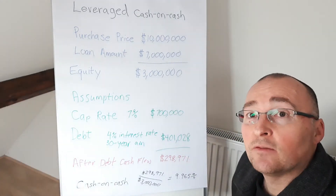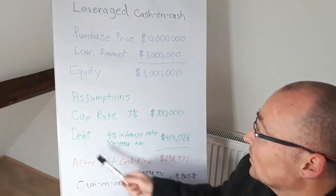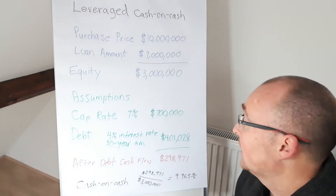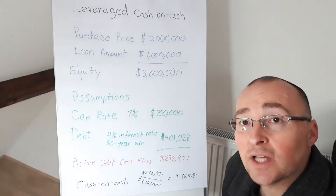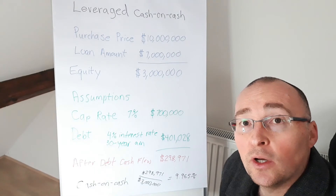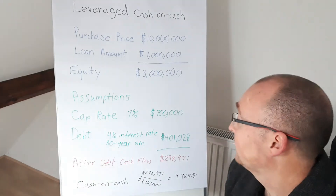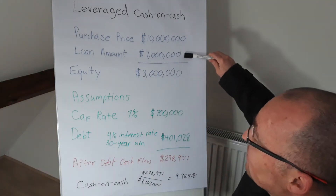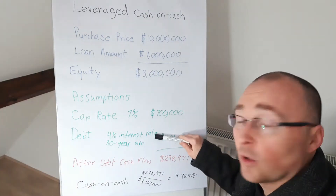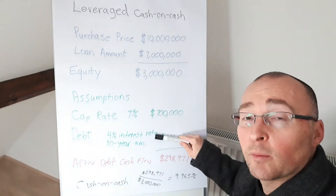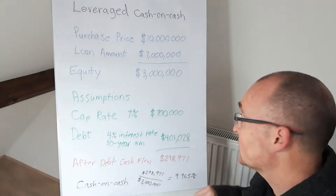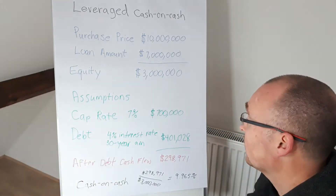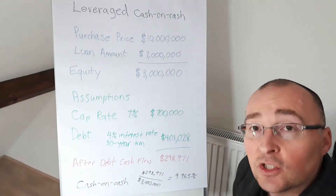From a debt perspective, we are going to assume that we can get a 4% interest rate and we are going to be amortizing the loan over a 30-year time period. Based on that assumption — $7 million of debt at a 4% interest rate and a 30-year amortization — our annual debt costs are $401,028.